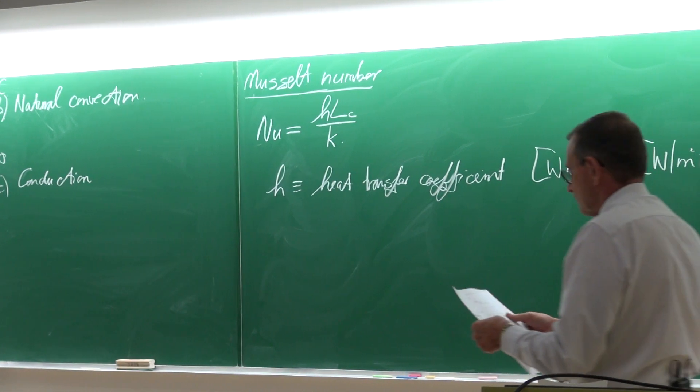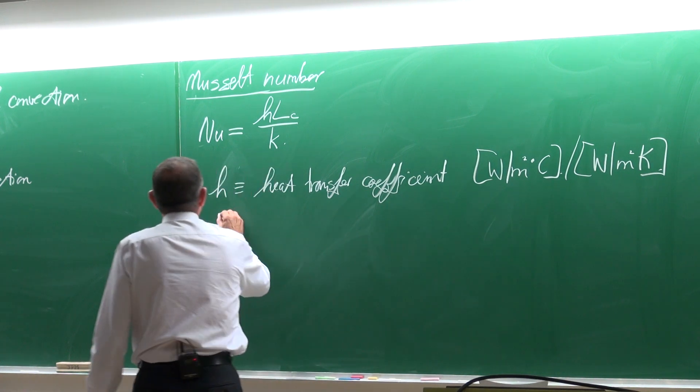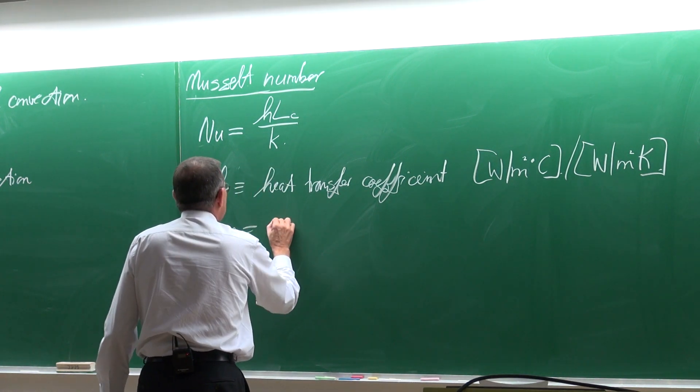Because a temperature difference in Celsius is the same as a temperature difference in Kelvin. Does it matter? LC is a characteristic length.